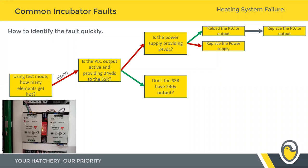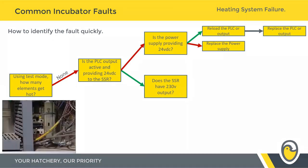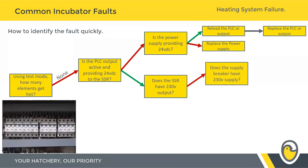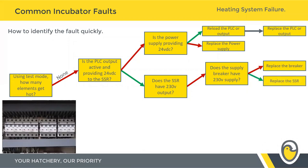If the PLC output is supplying 24 volts to the solid state relay, look at the secondary side of that solid state to check it's got 220, 230, or 110 volts going out to the heating elements. If it doesn't, check the breakers — make sure it's on, check the wiring for loose connections, and make sure you've got a clean 230-volt supply. If you don't, replace the breaker. If you do, replace the solid state relay. Within five steps, you've narrowed down the fault on the incubator to exactly what it is.